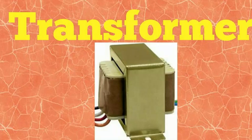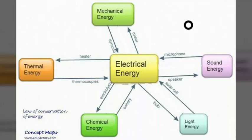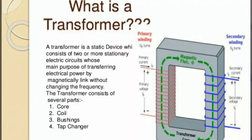A transducer converts energy from one form to another — mechanical energy, electrical energy, and other types. So a transformer converts from high voltage to low voltage and from low voltage to high voltage. It is based on electromagnetic induction, also known as mutual induction.